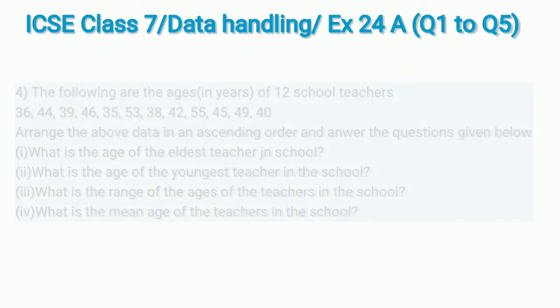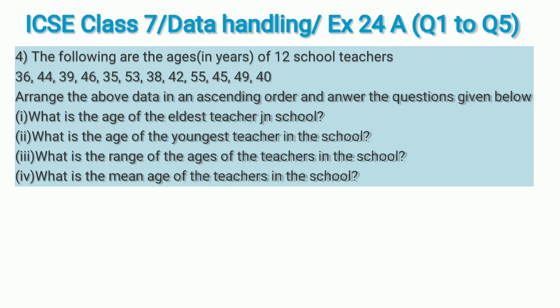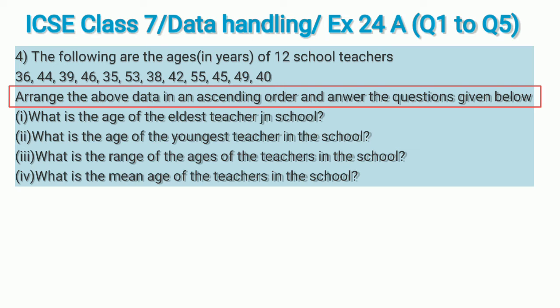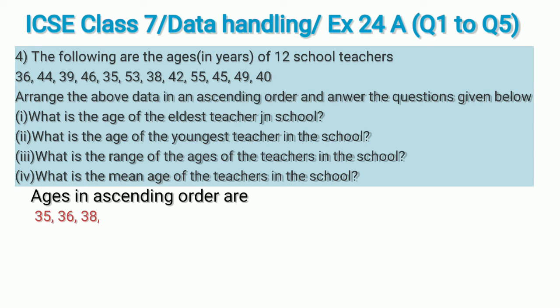Question 4: the following are ages in years of 12 school teachers. We have to arrange the data in ascending order and answer the questions given below. Arranging the ages from youngest to eldest, the ages in ascending order are: 35, 36, 38, 39, 40, 42, 44, 45, 46, 49, 53, and 55.